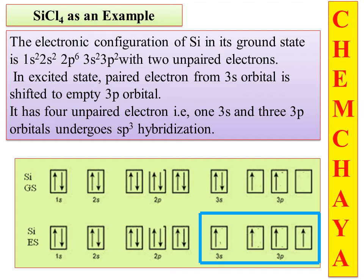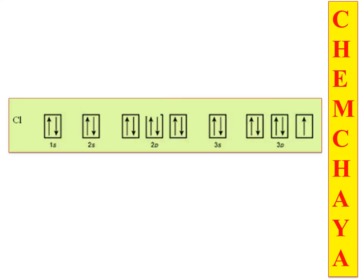We are going to combine with chlorine. The atomic orbital of chlorine is combined with the sp3 hybrid orbitals of silicon. Silicon undergoes sp3 hybridization, giving four sp3 hybrid orbitals oriented in the four corners of a tetrahedral. The bond angle maintained is 109.5 degrees.